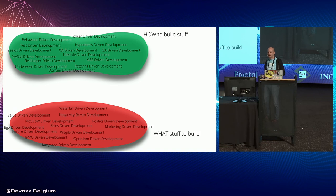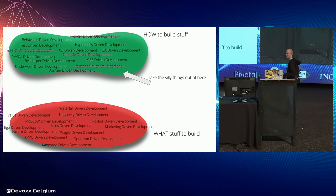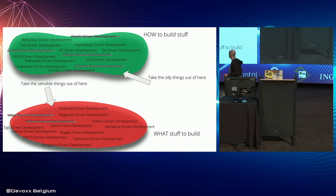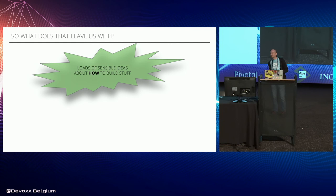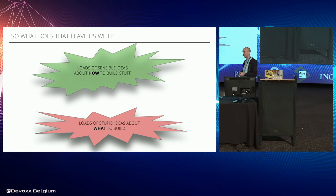Technology choices can sometimes be good and sometimes bad, so I took the middle bit out. Looking at the two remaining groups — how to build, and what to build — I found we've got loads of sensible ideas about how to build things, but loads of stupid ideas about what it is we're going to build. Why would that be?